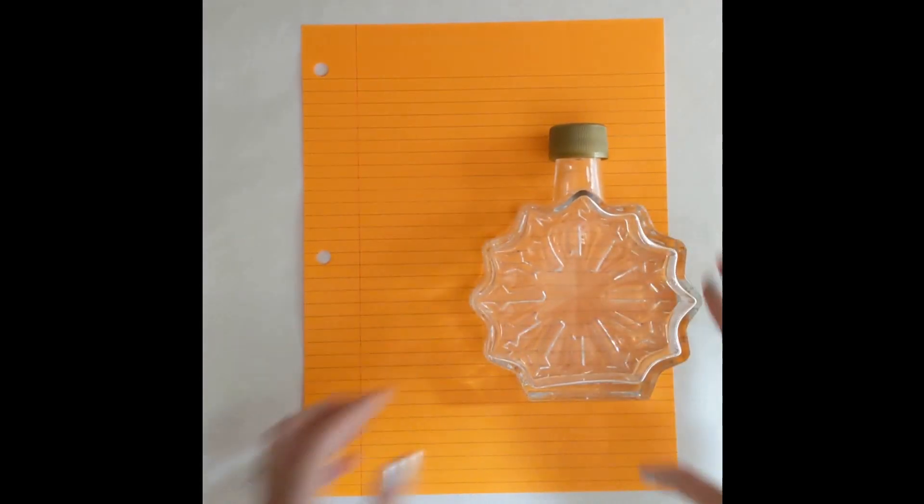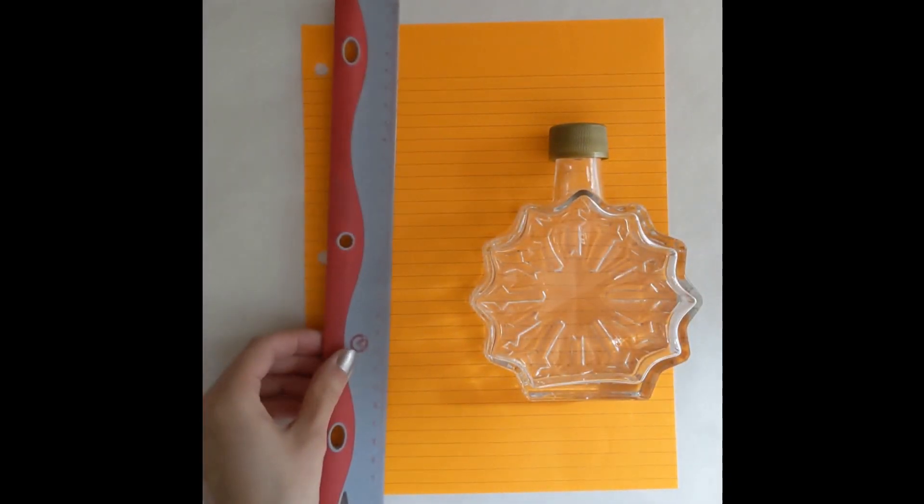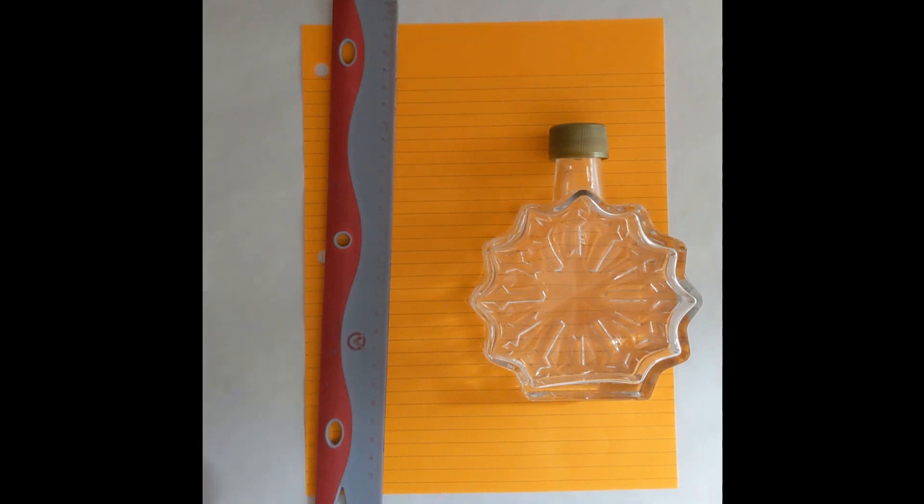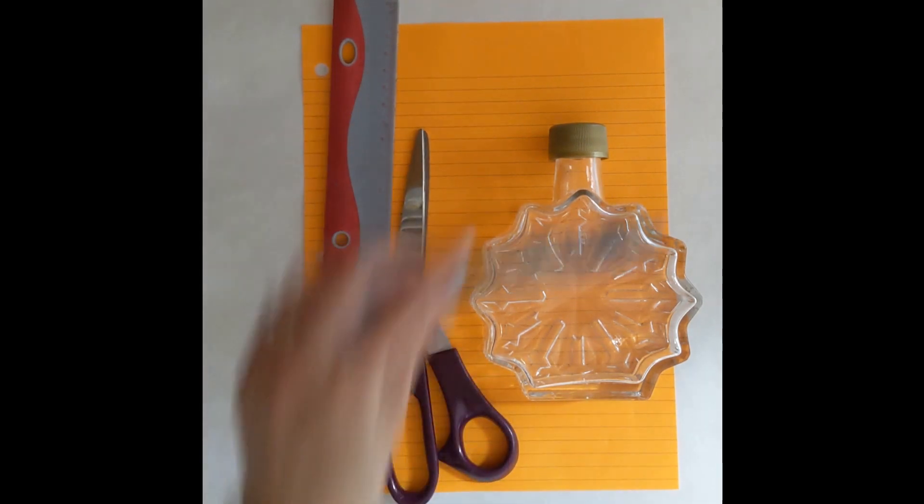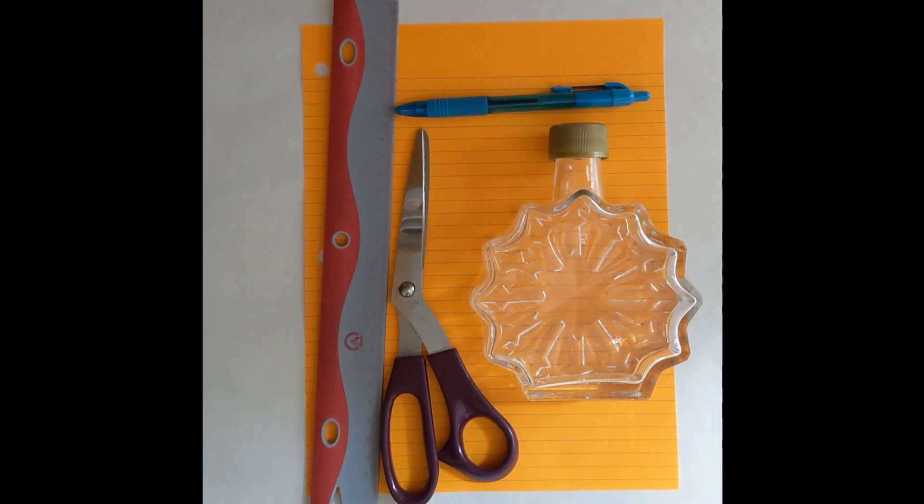To get started we are going to need a few supplies, most of which you can probably find in your home. First we'll need a standard sheet of letter sized paper, then we'll need a glass jar. I'm using an empty maple syrup jar. Then we'll need a ruler, some scissors, a writing utensil, and that's it.